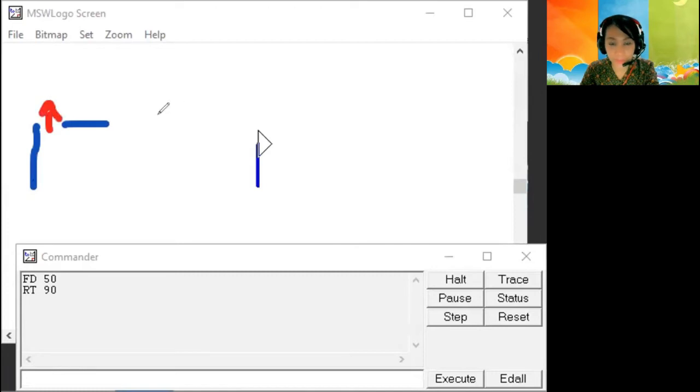Empty, no line at all. Okay, so we need to use PU, and then FD, for example 30. So it means that the turtle will jump 30 steps without line. Next,